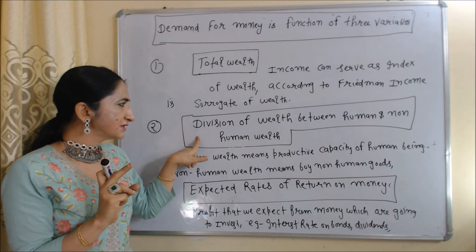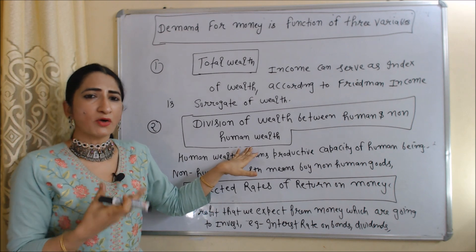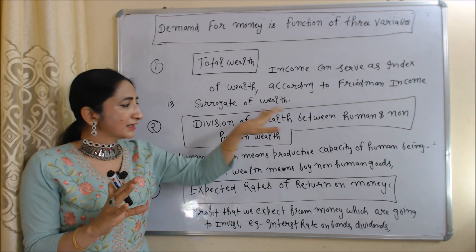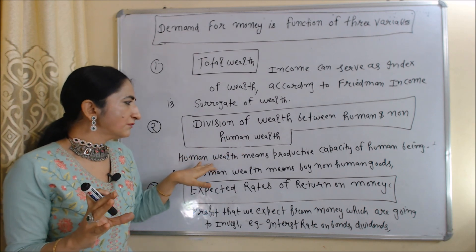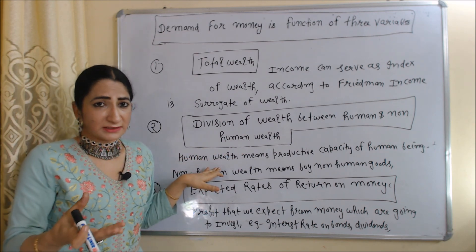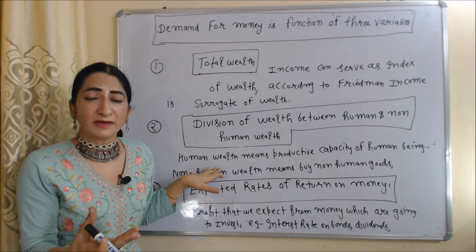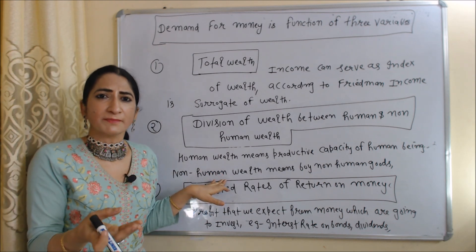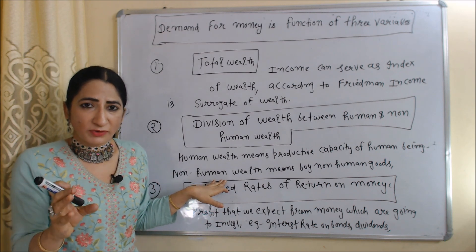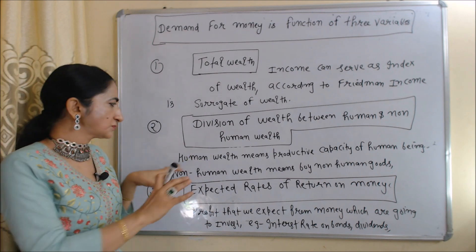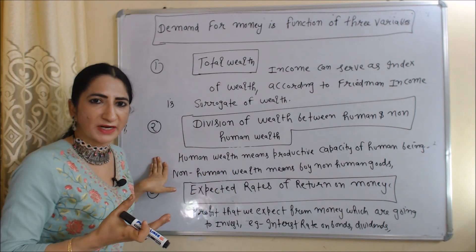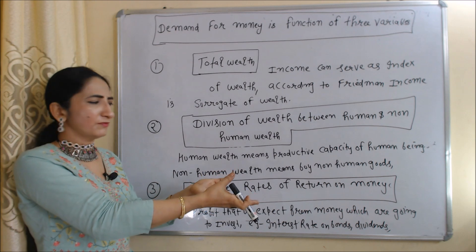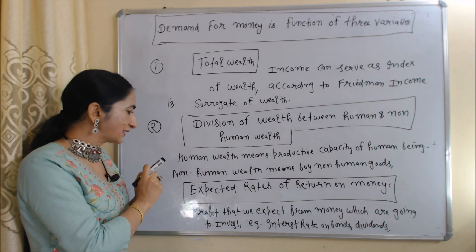The second factor that affects our money demand is the division of wealth between human and non-human wealth — how much money we want to spend on human wealth versus non-human wealth. Human wealth means our productive capacity — our skills, knowledge, experiences, etc. Non-human wealth means physical goods, for example car, property, etc. How much money we demand depends on how much we want to spend to acquire skills, knowledge, or to buy non-human wealth.